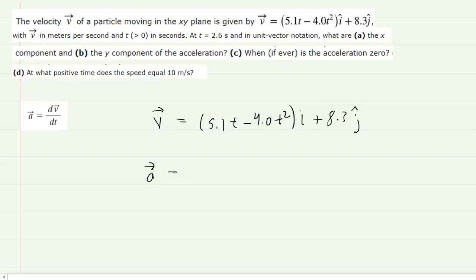So the acceleration vector equals, now for the i hat component, the derivative will be 5.1 minus 8t. And then for the j hat, or y component, notice the derivative is 0 because we have just a constant value here. So in fact, there is 0 acceleration in the y direction, and we only have acceleration in the x direction.